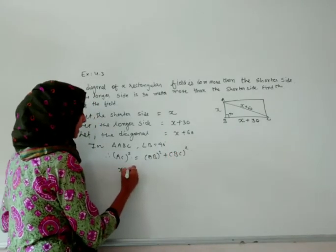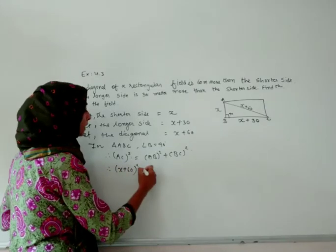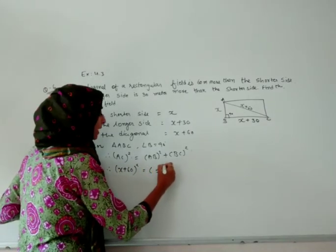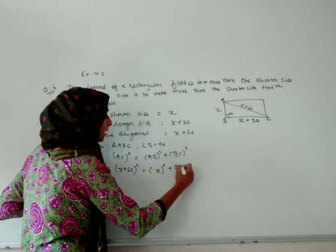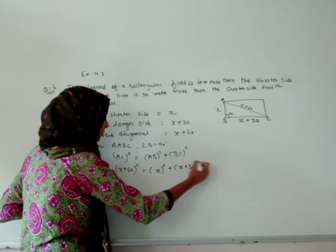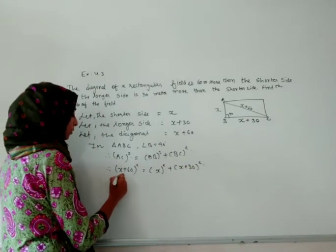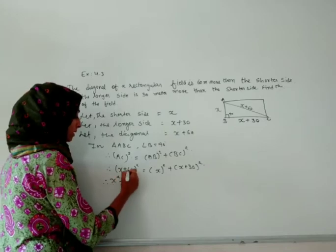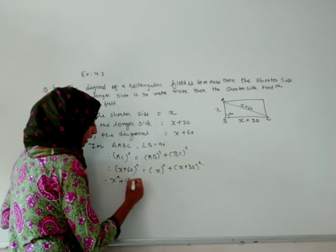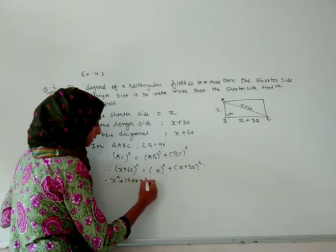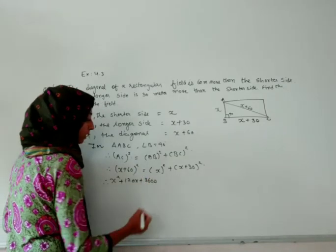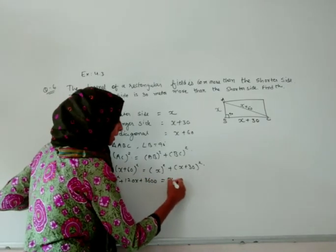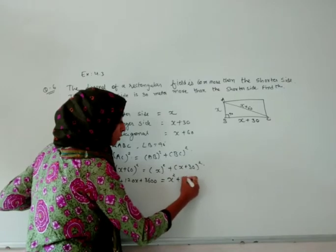Let us write x plus 60 whole squared. We will write ABC, that is x squared, and BC, that is x plus 30 whole squared. If we are opening the bracket, it will be x squared plus 120x plus 3600.